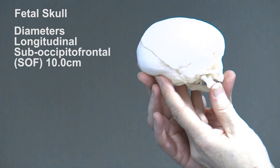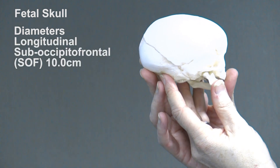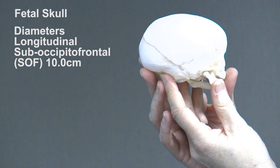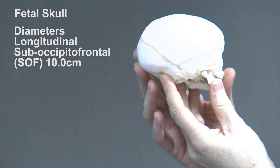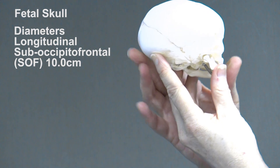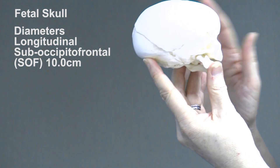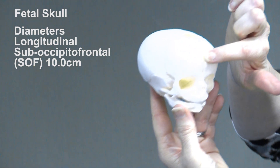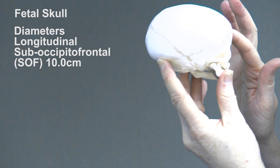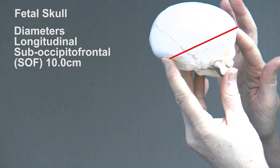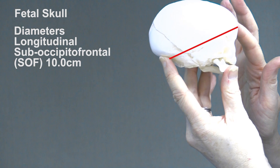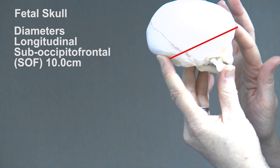The next diameter is the suboccipitofrontal diameter, or SOF, which is 10 centimeters. This is measured from below the occipital protuberance to the centre of the frontal suture.